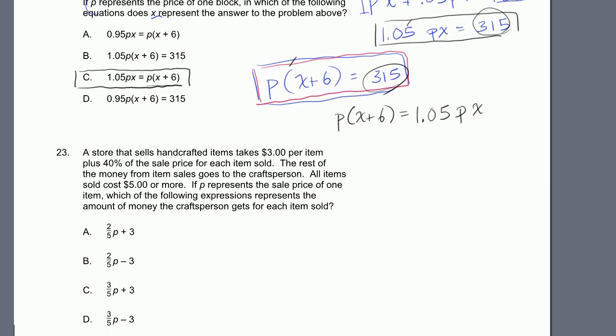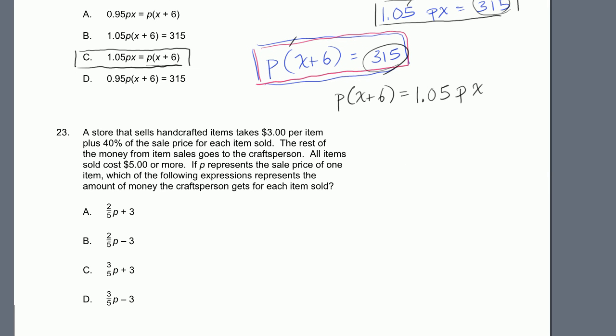Problem 23. A store that sells handcrafted items takes $3 per item plus 40% of the sale price for each item sold. The rest of the money from the item sales goes to the craftsperson. All items sold cost $5 or more. If p represents the sale price of one item, which of the following expressions represents the amount of money the craftsperson gets for each item sold?